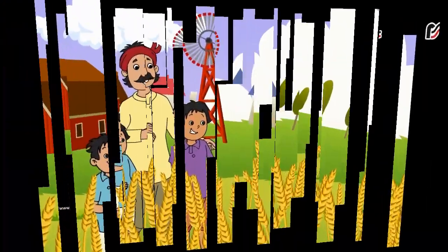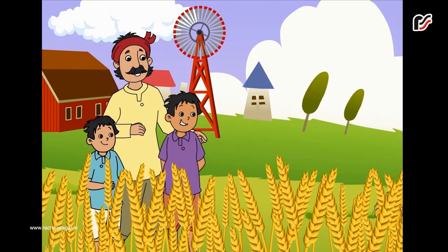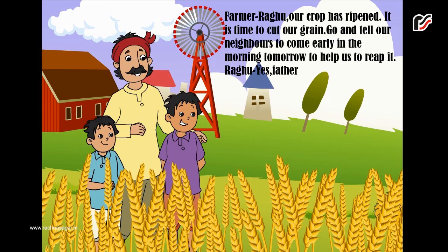One day while the mother lark was away, the farmer came to see his crop. Farmer joh hai apne khet ko dekhne ke liye aaya. The farmer said to his son Raghu: our crop has ripened, it is time to cut our grain. Go and tell our neighbors to come early in the morning tomorrow to help us harvest. Raghu said: yes father.